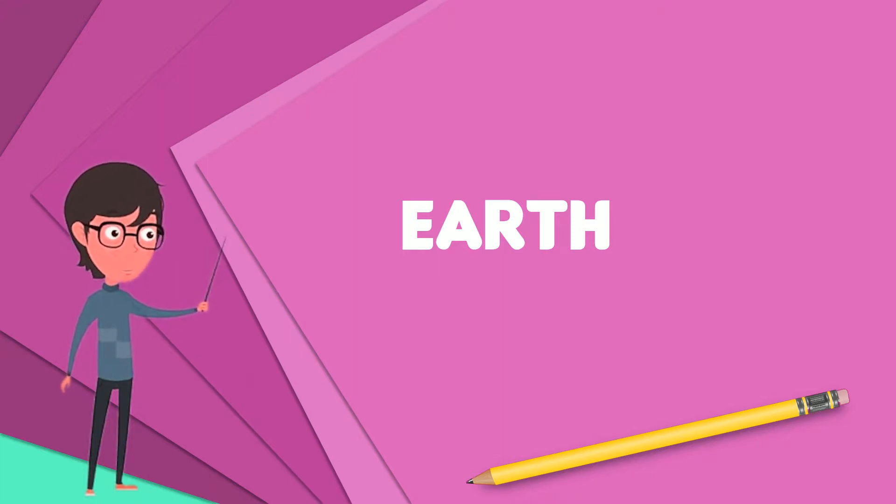Earth's gravity interacts with other objects in space, especially the Sun and the Moon, Earth's only natural satellite. Earth revolves around the Sun in 365.26 days, a period known as an Earth year.